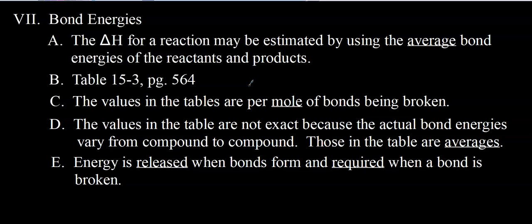Those are the tables we're going to use to calculate delta H for a reaction. You may have noticed that all of the values are positive — that's because these values are per mole of the bonds being broken. The values in the table are not exact because actual bond energies vary from compound to compound, so these are just averages. Energy is released when bonds form, and energy is required when bonds are broken. The values represent the energy required to break those bonds; energy released would be the same magnitude but with a negative sign.